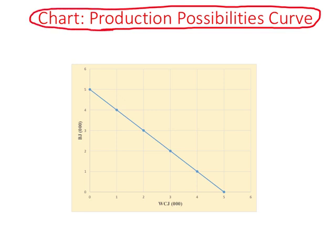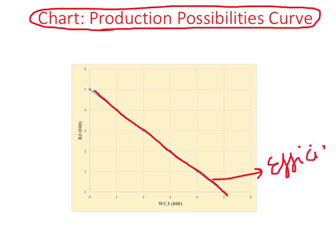Revisiting the PPC chart, you will observe the following: when Mark is anywhere on this PPC he is producing a total of 5,000 jeans — that is the maximum amount the firm can produce given its resources and technology. Therefore, any point on the PPC is an efficient point, because the firm is producing the maximum it can.